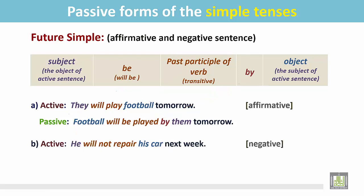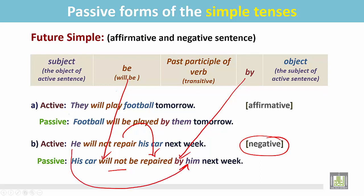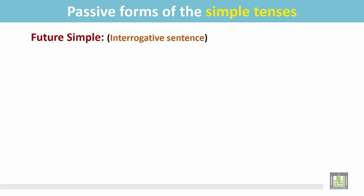Another example: 'He will not repair his car next week.' This is a negative sentence in the future simple tense. The passive form: the object 'his car' becomes the subject; the be verb 'will' — and to make it negative, 'not' — becomes 'will not be'; the past participle form of 'repair' is 'repaired'; then the preposition 'by' and the subject of the active sentence becomes the object. Result: 'His car will not be repaired by him next week.'